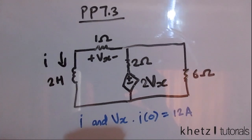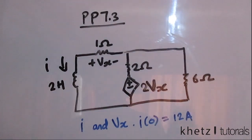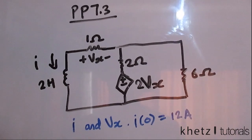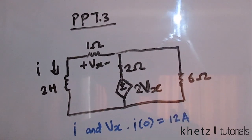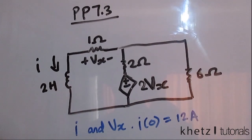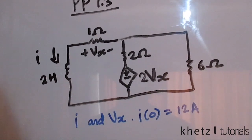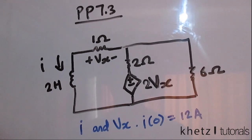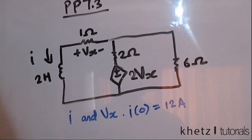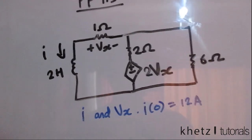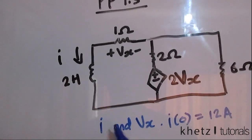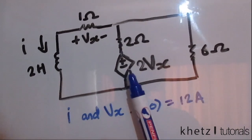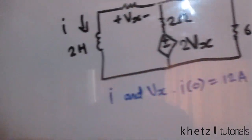Welcome to Cat's Tutorials. In this video I'll be covering practice problem 7.3 from the fifth edition of the textbook. We need to find i as well as vx. We have a dependent source here, and we have resistors in the circuit.